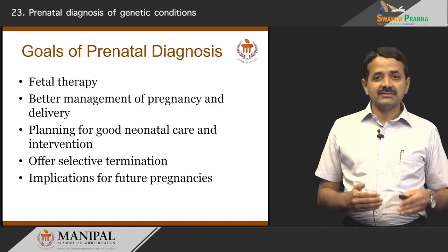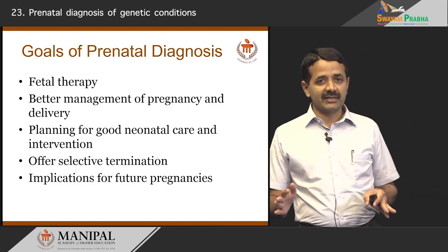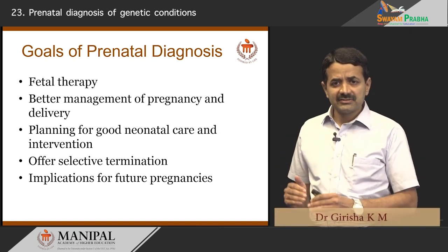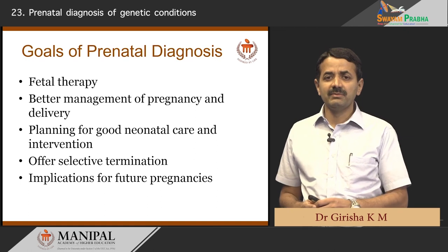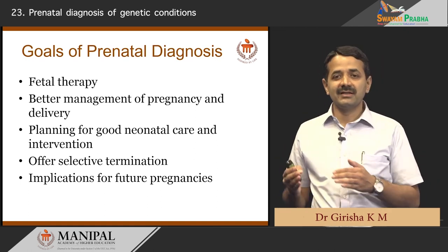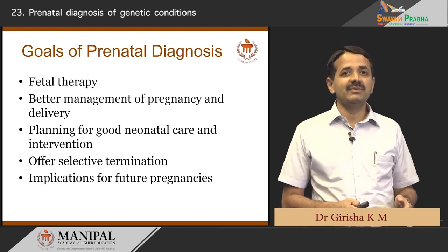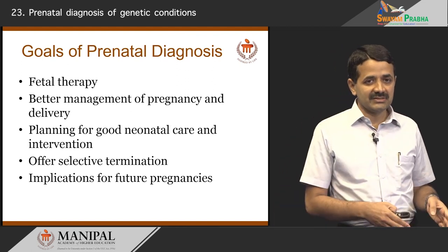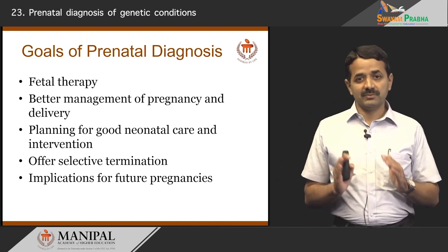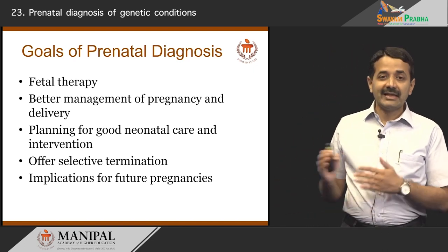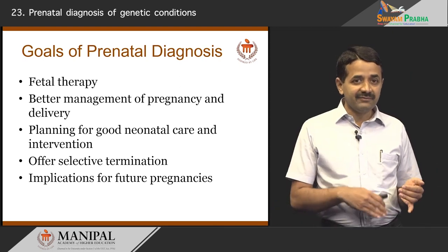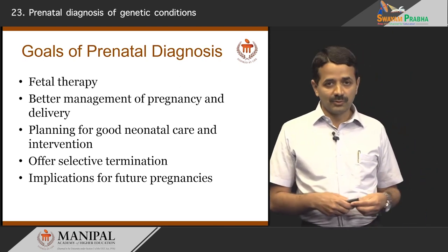Let us discuss what are the goals of prenatal diagnosis. Why should we detect a genetic disease or a birth defect in the baby before the baby is born? The ultimate wish of the medical field is to treat the baby if there is some problem — we call it fetal therapy. The major goal is to have a healthy baby at the end of 9 months of pregnancy by treating the genetic defects if they can be identified in utero.